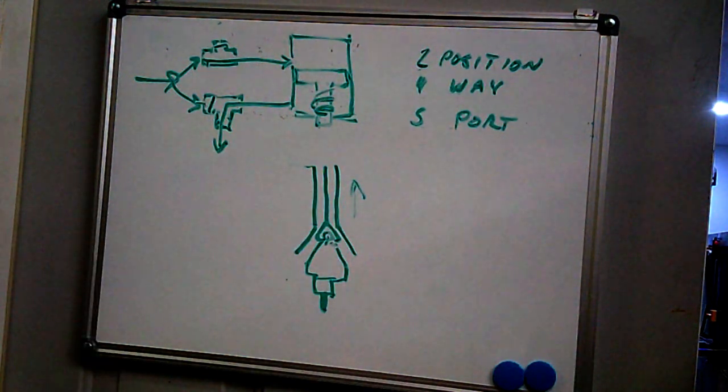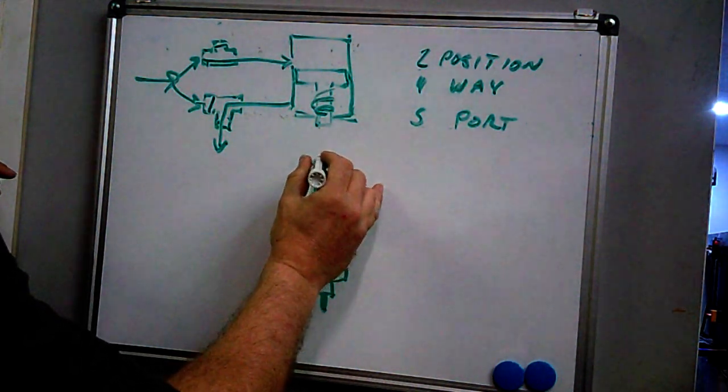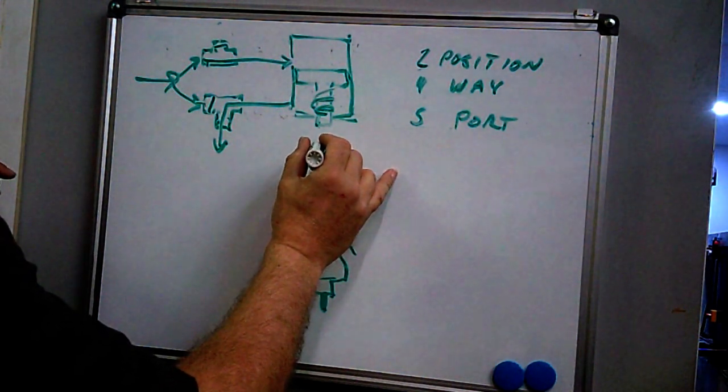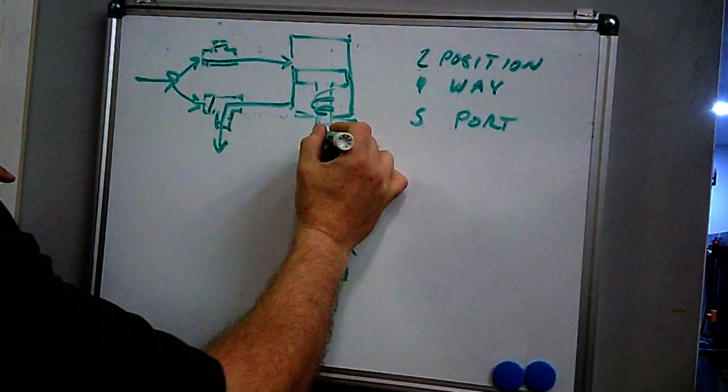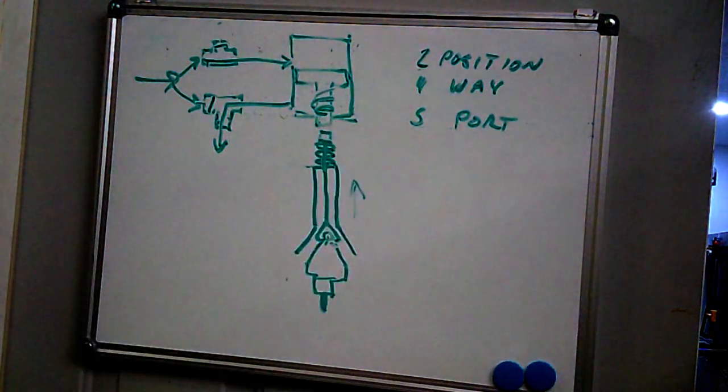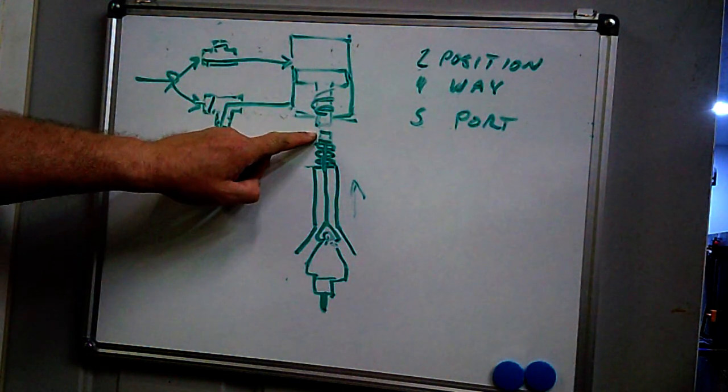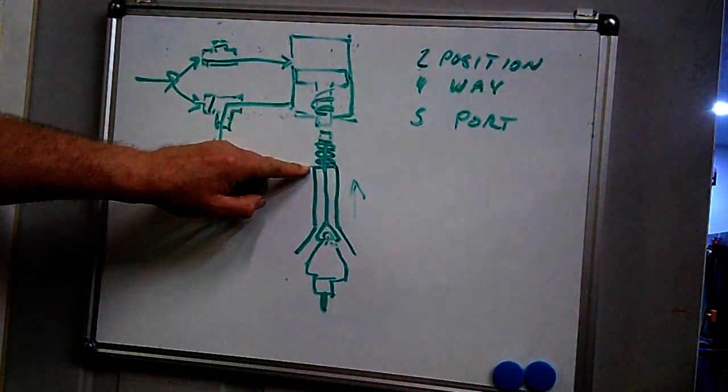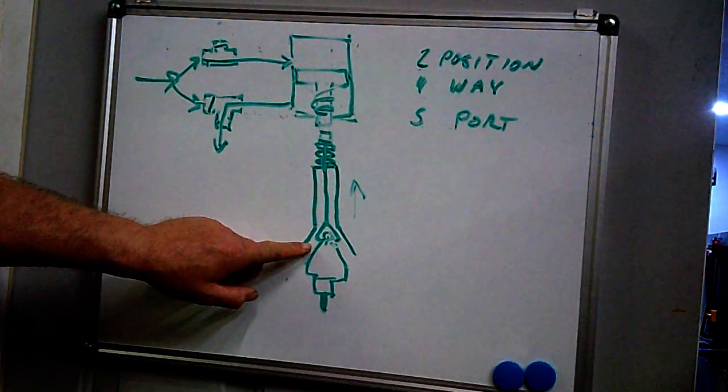The way that's done is right here on top of the spindle you'll have a spring of some type, maybe a stack of Belleville washers, maybe a really heavy coil spring. It really depends on how it was engineered. The draw bar goes through those. On top of the draw bar is your bolt head. If you've ever used a manual machine, I'm sure you've turned a bolt head like that to tighten a tool up into the spindle. Well on this, you tighten the draw bar until these springs are partially compressed.